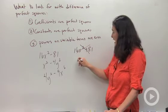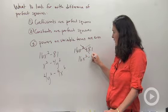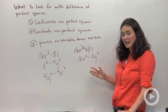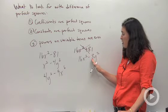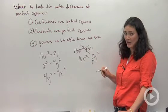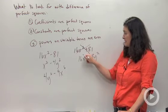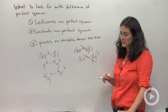Something else I could have would be 16x² - 8y². This is not a difference of perfect squares because my coefficient right there is not a perfect square. 8 is not a perfect square, that's why this is not a difference of perfect squares.